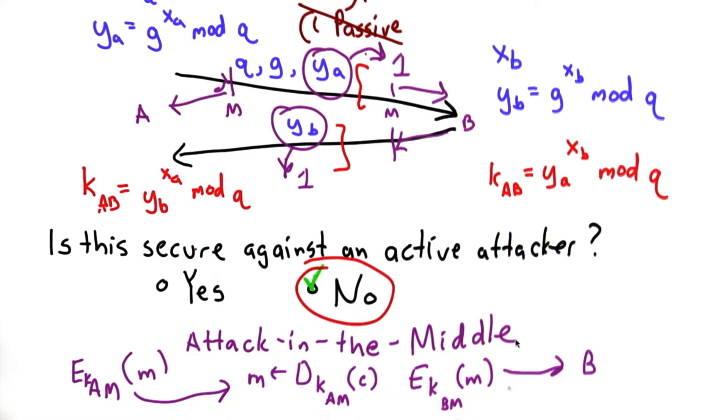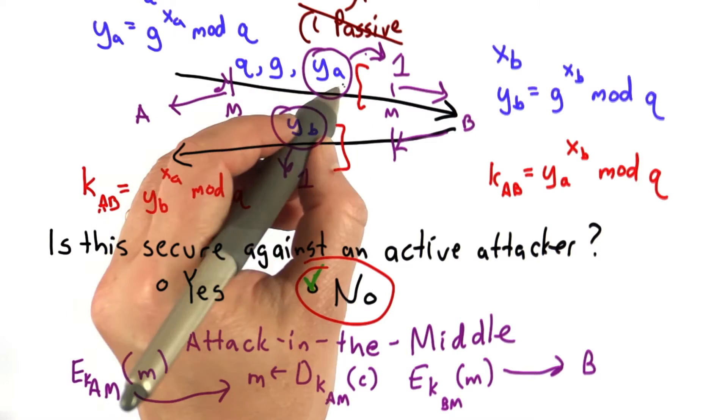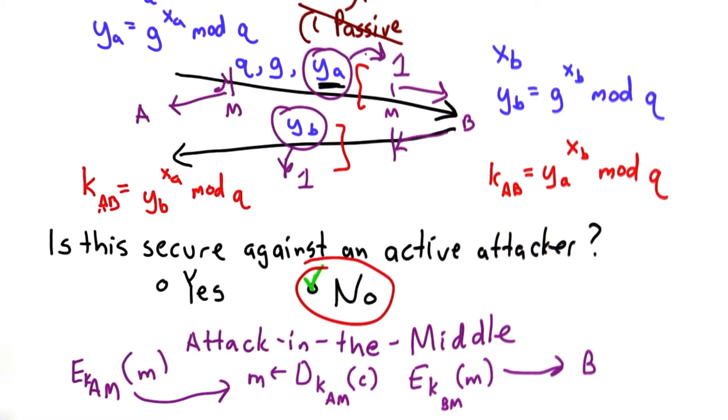So Diffie-Hellman can only be used in places where either the integrity of the channel is guaranteed, or there's a way for Bob to find out Alice's YA value and know that it's really Alice.